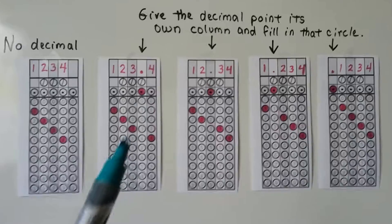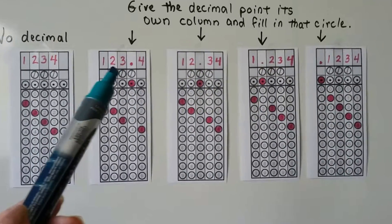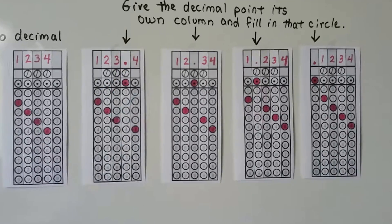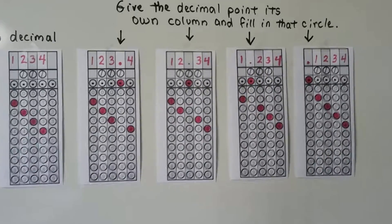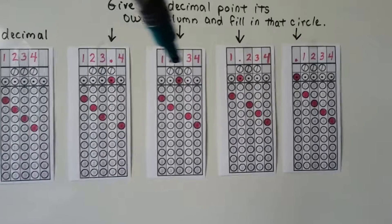When there is a decimal in the answer, that decimal gets its own column. We would write in 123 and 4 tenths. The decimal is always getting its own column and we're filling in that dot circle.